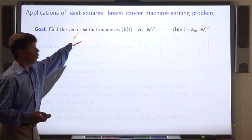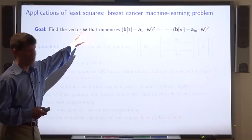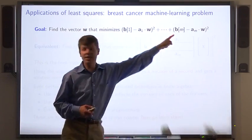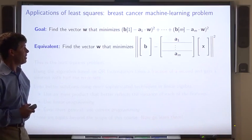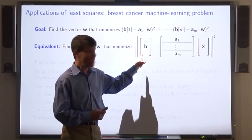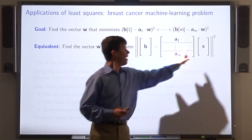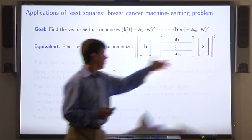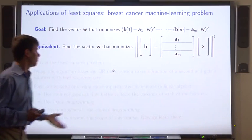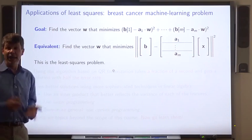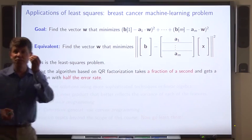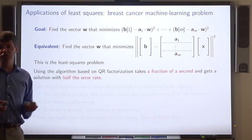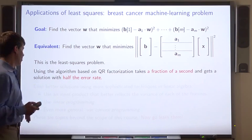So remember, this is the goal. To find a vector w. It minimizes this sum of squares. Well, we can rewrite that sum of squares as the squared norm of a vector b minus a times x. This is just the least squares problem. So we can go ahead and use the algorithm based on QR factorization. It takes a fraction of a second. And it gets a better solution, a solution with smaller error.